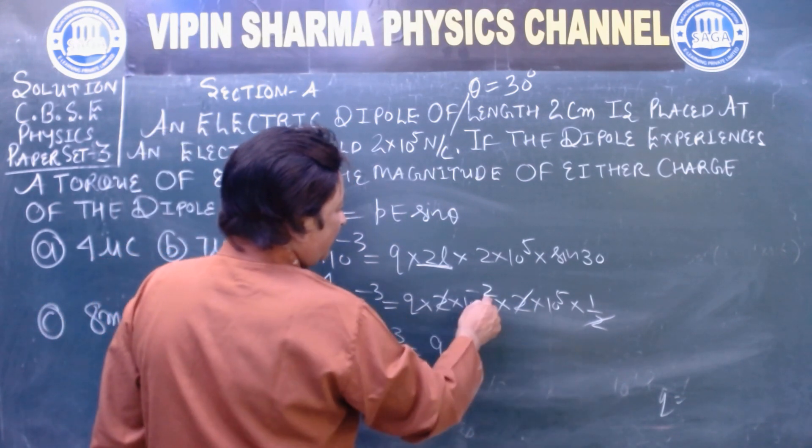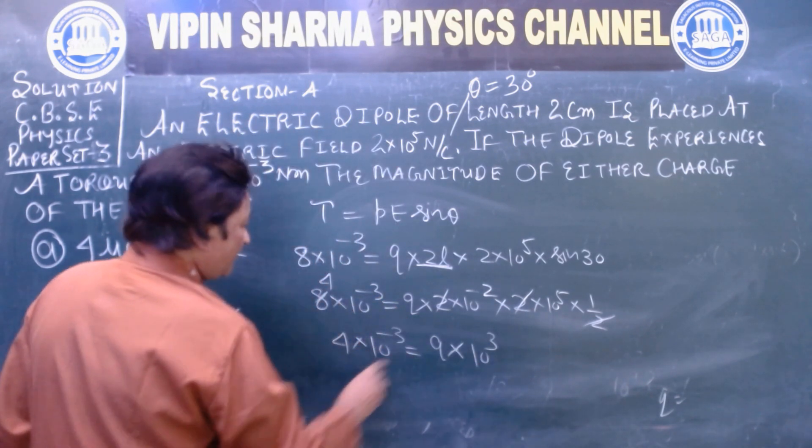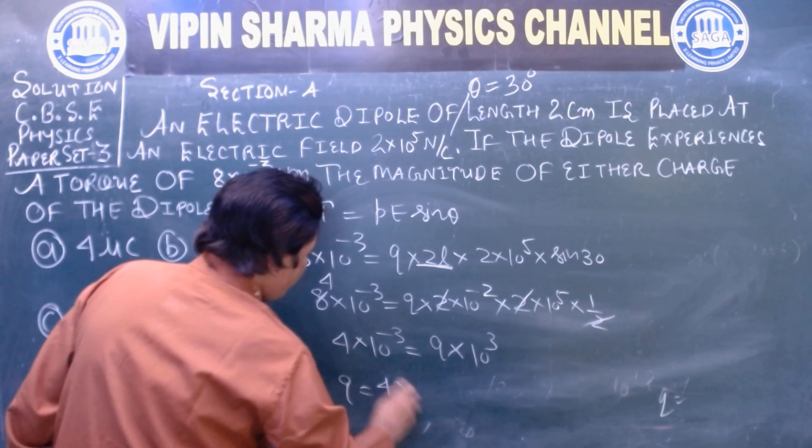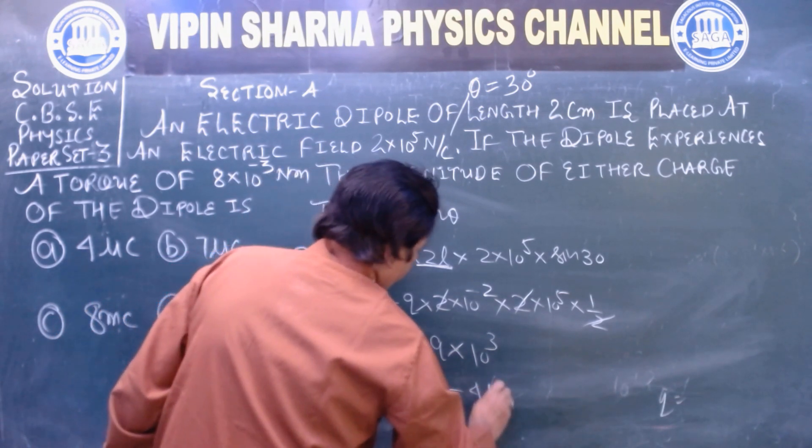10^5, 10^-2, that is 10^3. So 10^3 comes here, that is 10^4 × 10^-6, that is 4 microcoulomb.